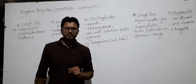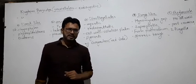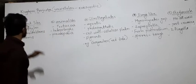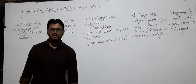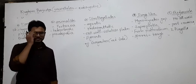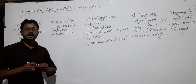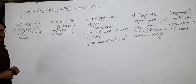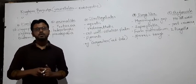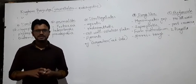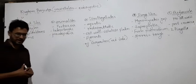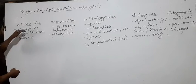Ab yeh jo Kingdom Protista hai, isme humlogo ko dekhna hai ki groups kaun kaun se hain. We have classified this Kingdom Protista into five different groups. Sabse pahela jo group hai, it is plant-like Protista. Plant-like Protista - it means they resemble plants. Sabse paheli characteristic plant ki yeh hoti hai: they are autotrophs. Yeh bhi autotrophs hain because they have the ability to synthesize their own food material with the help of photosynthesis.